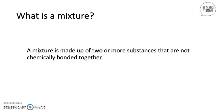First of all, we're going to talk about what a mixture is. A mixture is made up of two or more substances that are not chemically bonded together. In our chemistry videos we talked about atoms, elements, and compounds, but a mixture is not chemically bonded, which means you can separate the substances. This is why there are four main ways of separating mixtures.